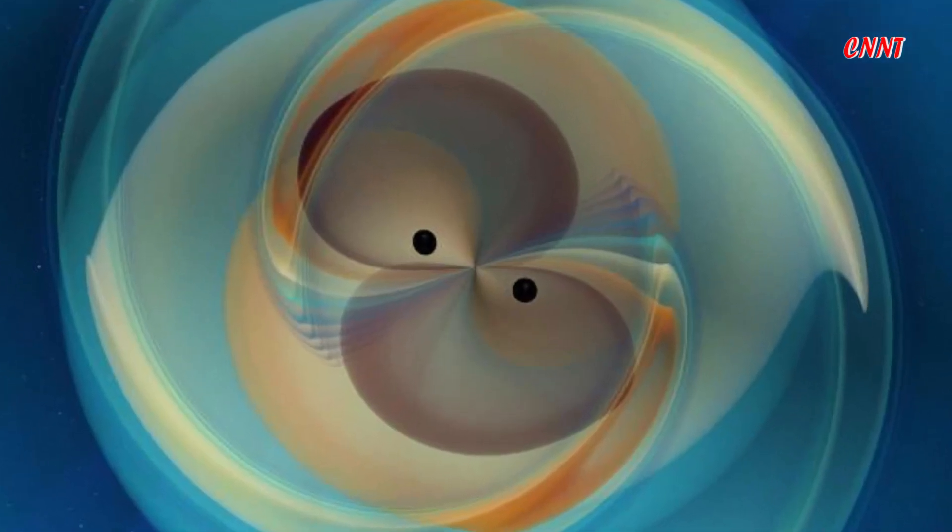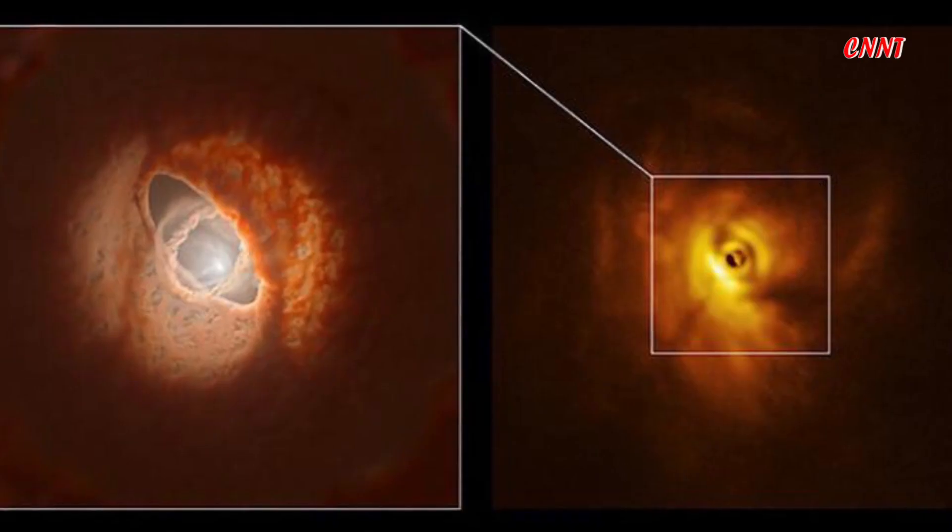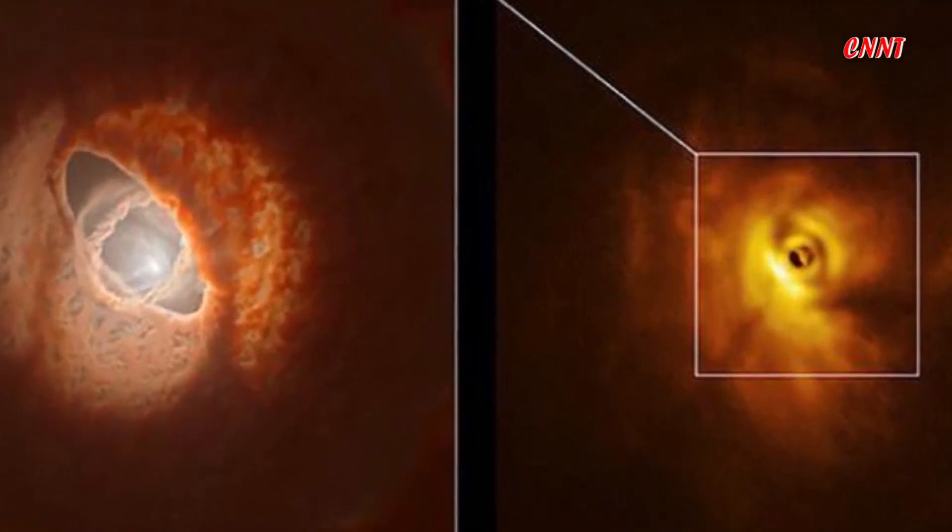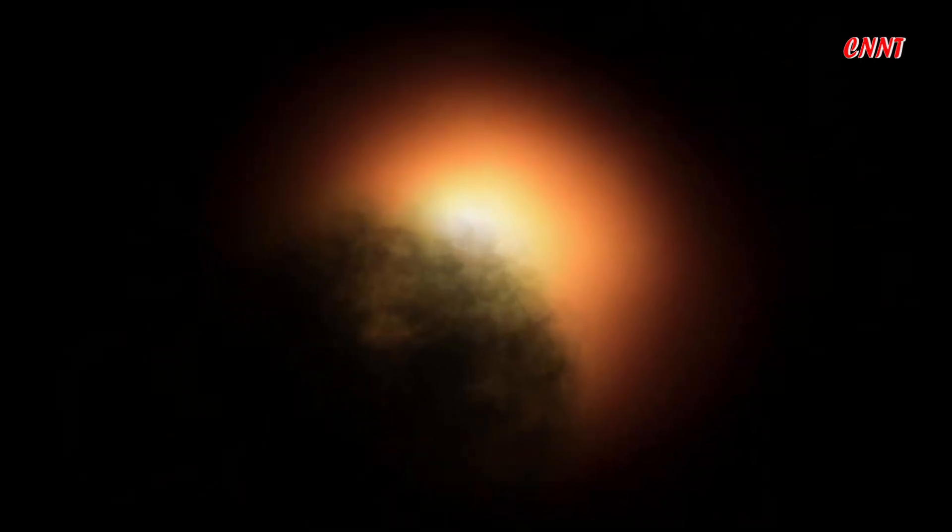Scientists were able to glimpse a galaxy as it ejected almost half of the gas it uses to form stars. They captured this rare observation using the Atacama Large Millimeter Sub-millimeter Array of telescopes in Chile. The light from this galaxy, known as ID 2299, has taken about 9 billion years to reach Earth.